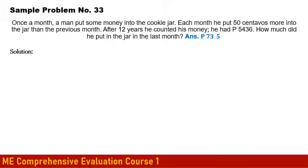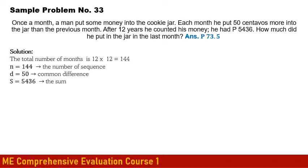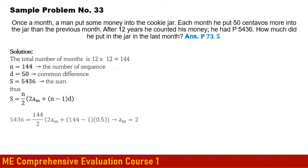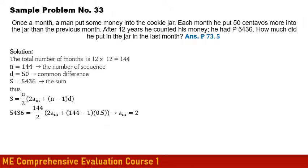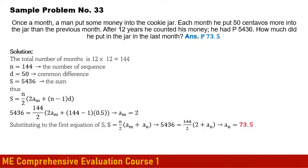Sample AP Problem 3: A man puts money into a cookie jar monthly, increasing by 50 centavos each month. After 12 years (n = 144 months), he has 5,436 pesos. Using the sum formula with n = 144, d = 0.50, and S = 5436, solving for a₁ gives 2 pesos (first month amount). Substituting back, the last month's amount (a₁₄₄) is 73.50 pesos.